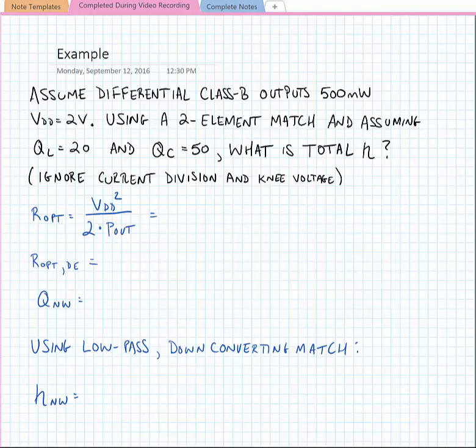Now with most power amplifiers, we tend to want to favor that low-pass down-converting transformation network. And the reason is that we typically like to be able to filter higher order harmonics using the low-pass shape of the network. And we typically need a down conversion from 50 ohms to a lower impedance for CMOS power amplifiers.